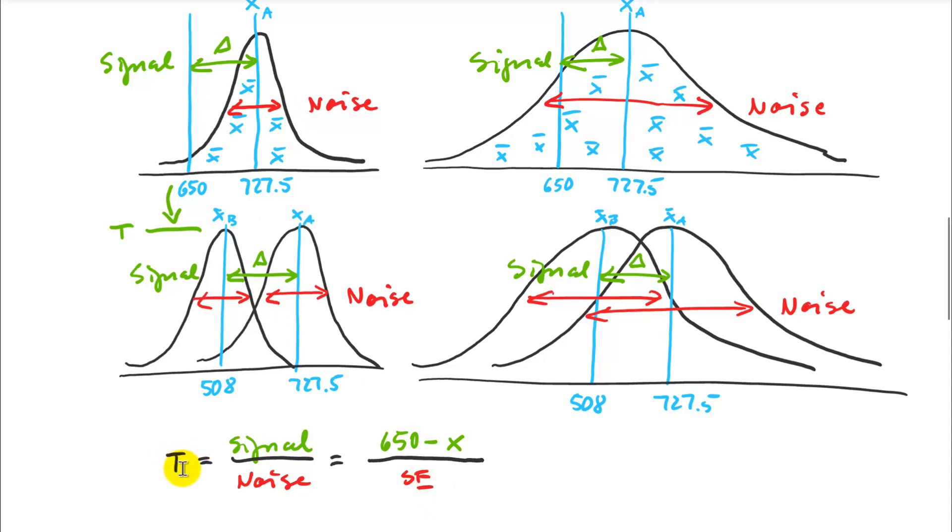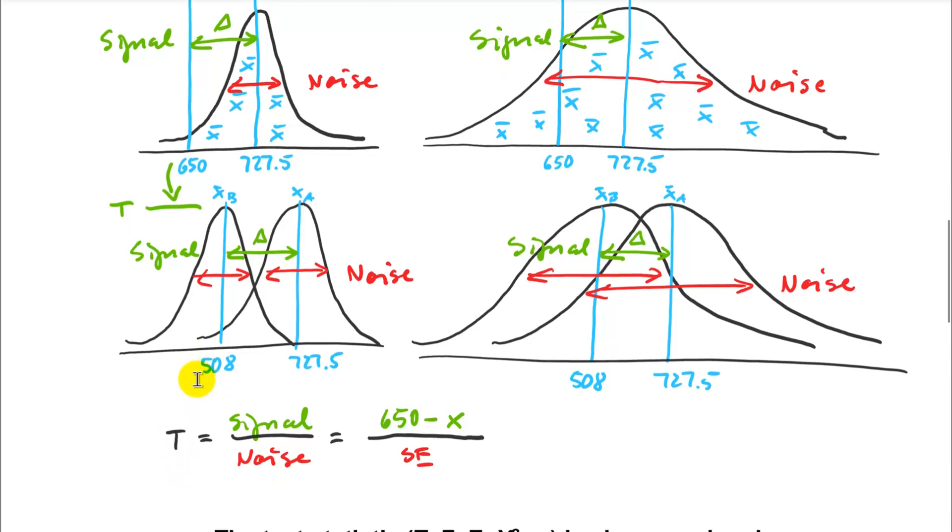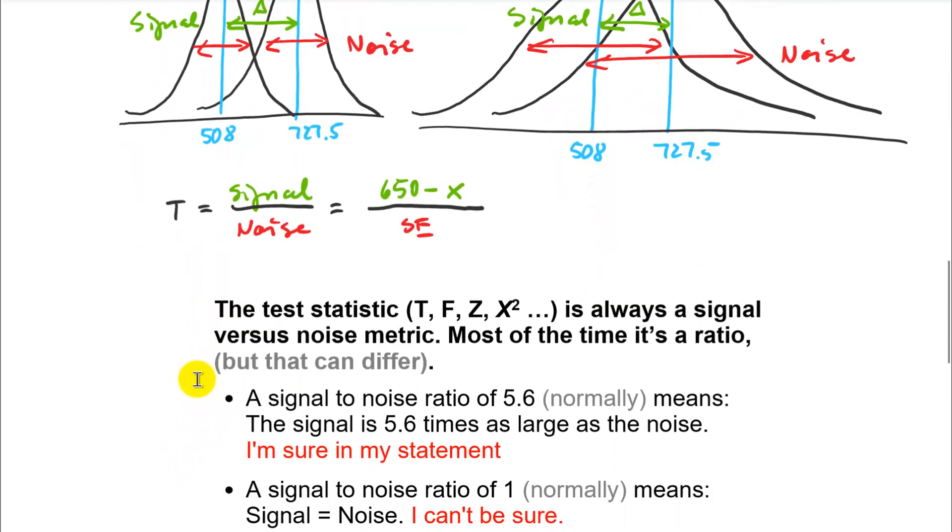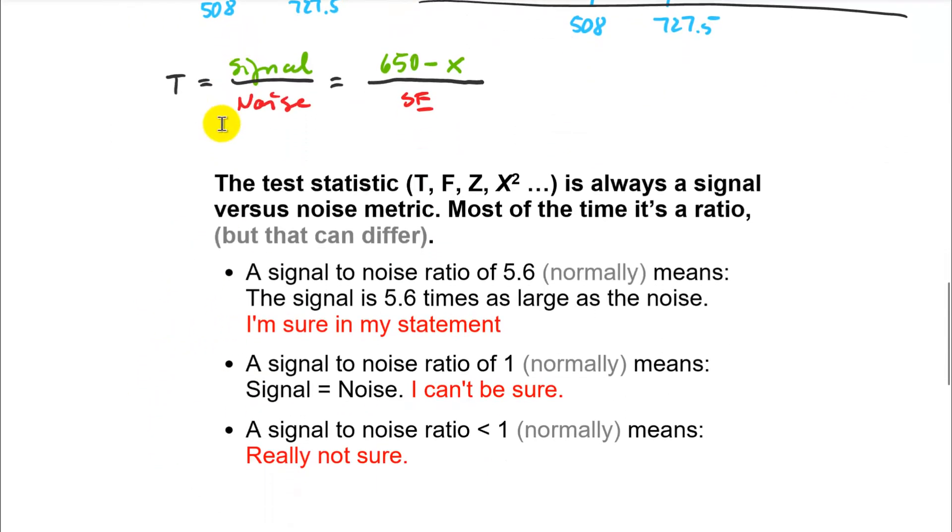So that is exactly a signal-to-noise ratio. The 650 minus the mean, that's my signal, and the noise is the standard error. And this way to calculate the test statistic is also something that is universal for any kind of statistical test. So whatever you do, if you have a t-test or F-test analysis of variance, or z-test or chi-square test, that test statistic is always a signal versus noise metric. So it's not always a ratio, most of the time it's a ratio, but it always is bigger if you have a bigger signal and smaller if you have more noise.